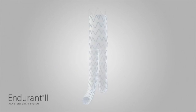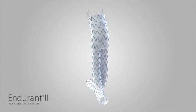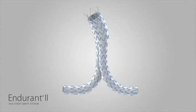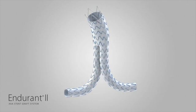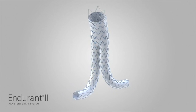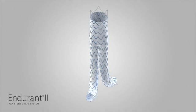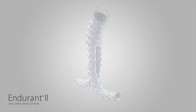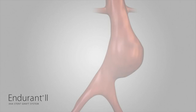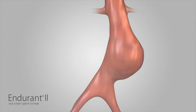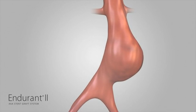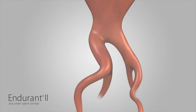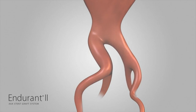The Endurant 2 stent graft system is designed to perform in a broad range of anatomies, including patients with both straightforward and challenging vasculature. This includes those with short or angulated infrarenal aortic necks and tortuous or small iliac arteries.